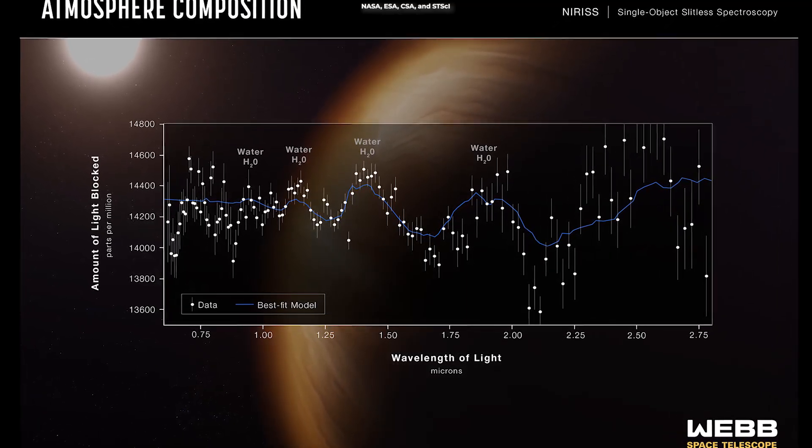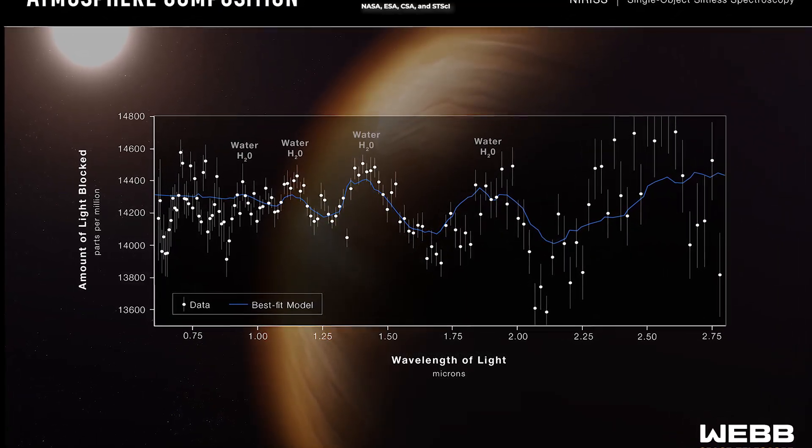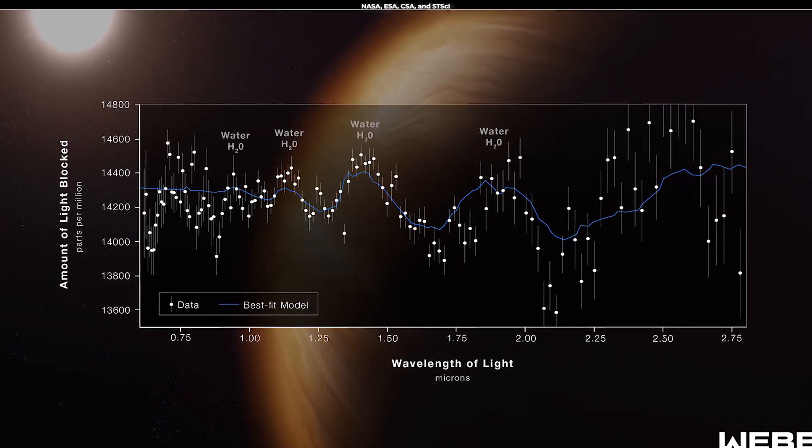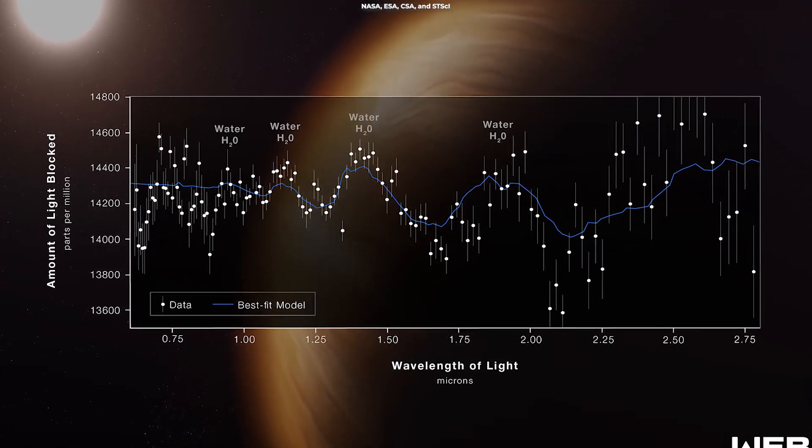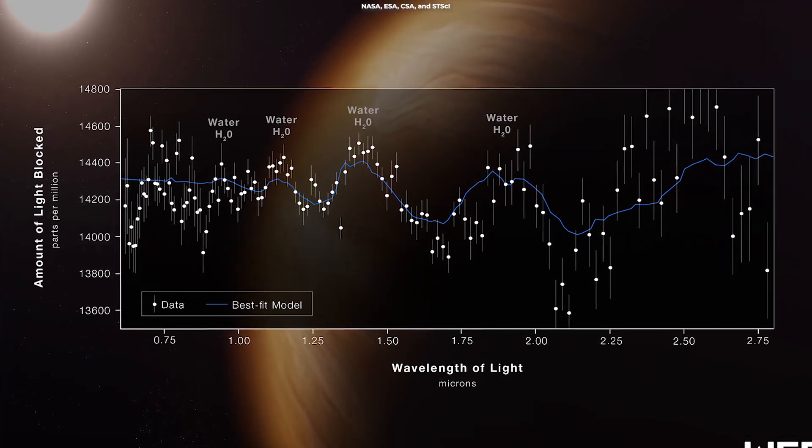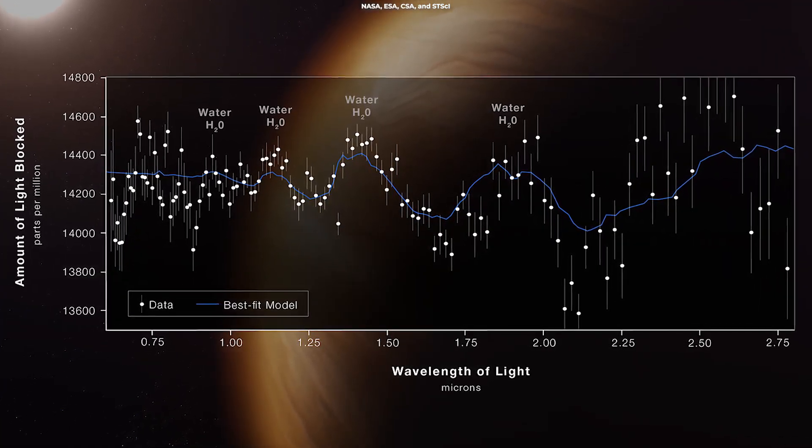in the atmosphere surrounding a hot, puffy gas giant planet orbiting a distant sun-like star. This is the most detailed observation ever, and it shows Webb's ability to analyze atmospheres hundreds of light-years away.